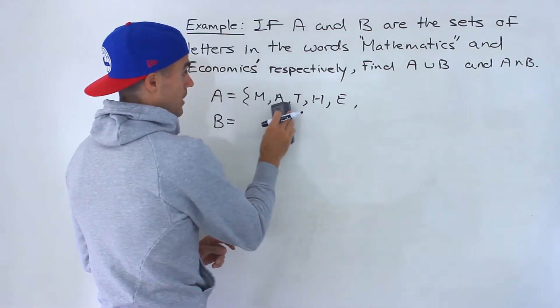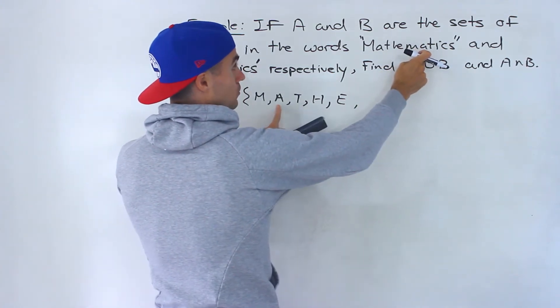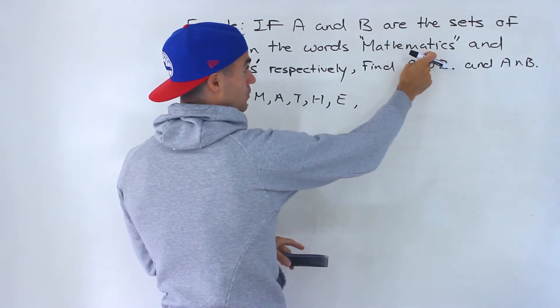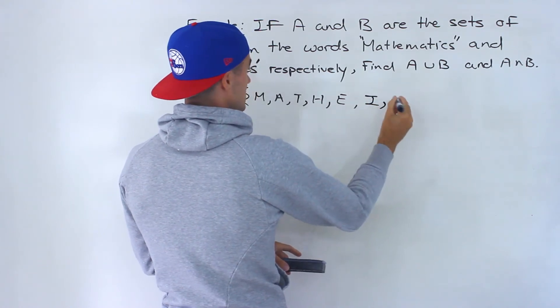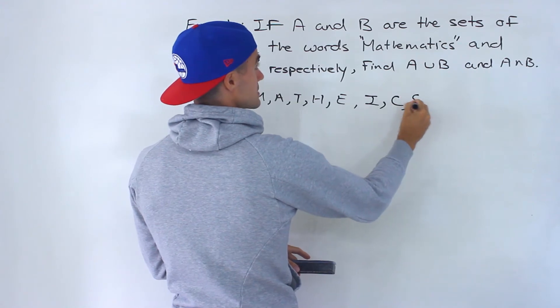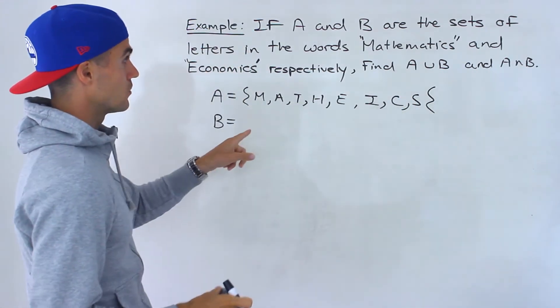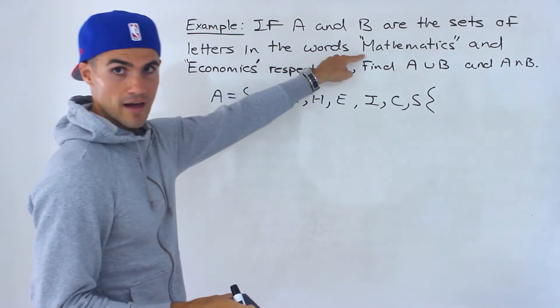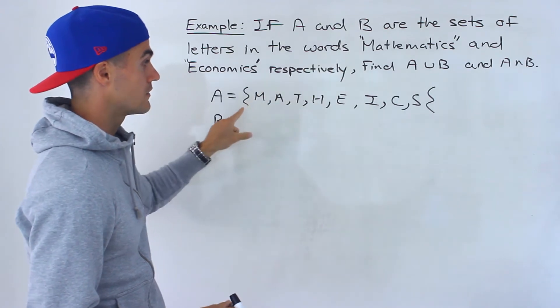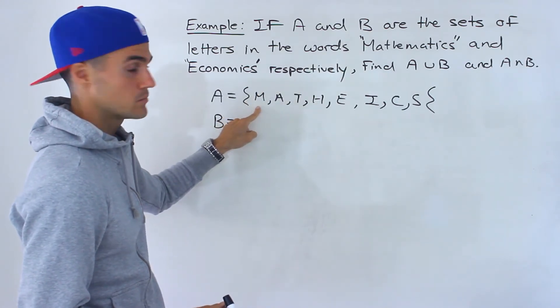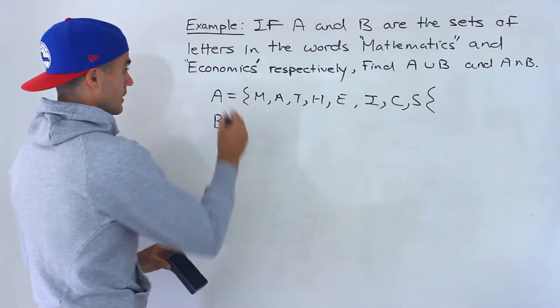So the actual set here would be M A T H E, the M we already wrote, the A we already wrote, the T we already wrote, the I we haven't wrote so we could write that, the C we haven't wrote, and then the S we haven't wrote. So the letters in mathematics if you represented them as a set this is how it would be. Each element is only written once.